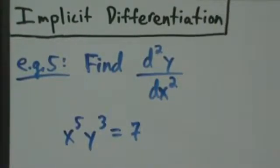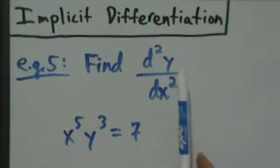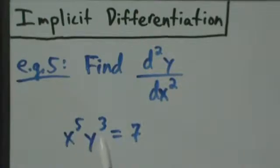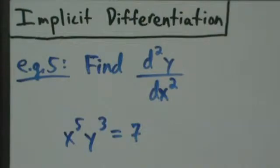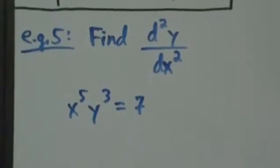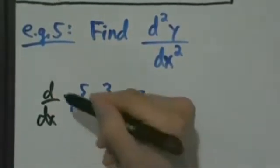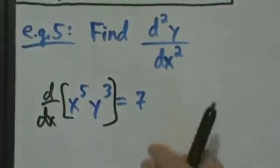Here's Example 5 with implicit differentiation. We're going to find d²y/dx², the second derivative. Our equation is x to the fifth times y cubed equals seven. To find the second derivative with implicit differentiation, there's nothing special — it can get messy, but just like with explicit functions, find the first derivative and then take the derivative again. We take d/dx of the left side equals d/dx of the right side.